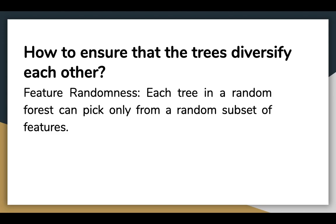In contrast, each tree in a random forest can pick only from a random subset of features. This forces even more variation among the trees in the model and ultimately results in lower correlation across trees and more diversification.